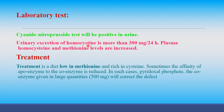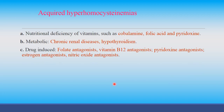Laboratory tests include the cyanide nitroprusside test, which is positive in urine. Excretion of homocysteine is more than 300 mg per 24 hours. Plasma homocysteine and methionine levels are increased. Treatment is a low methionine, cysteine-rich diet. Sometimes the affinity of apoenzymes to the coenzyme is reduced, and in such cases pyridoxal phosphate given in large quantity — 500 mg — will correct the defect.